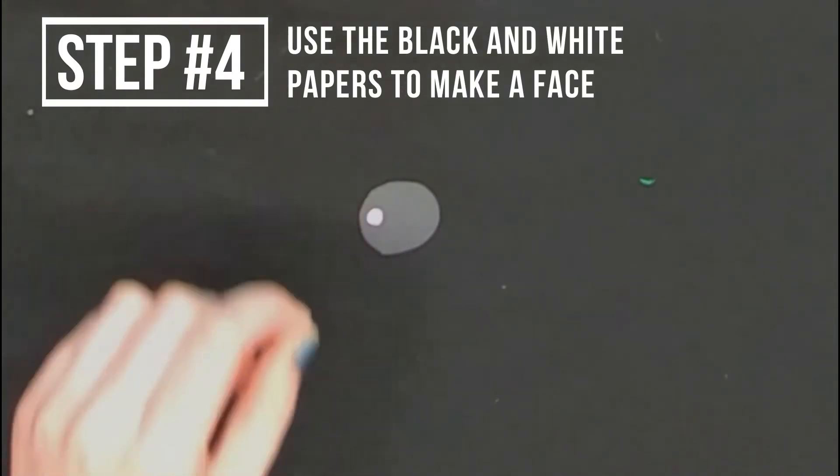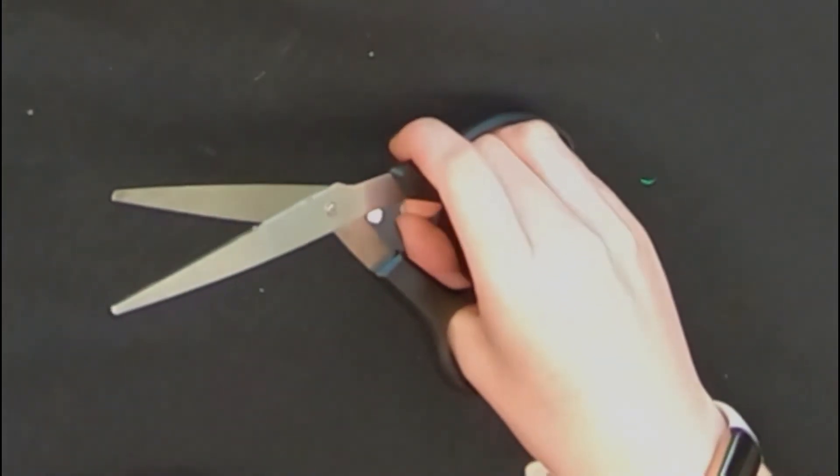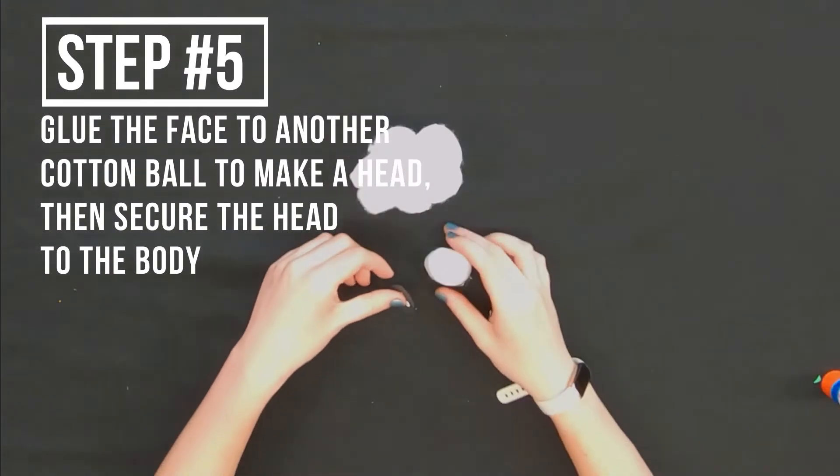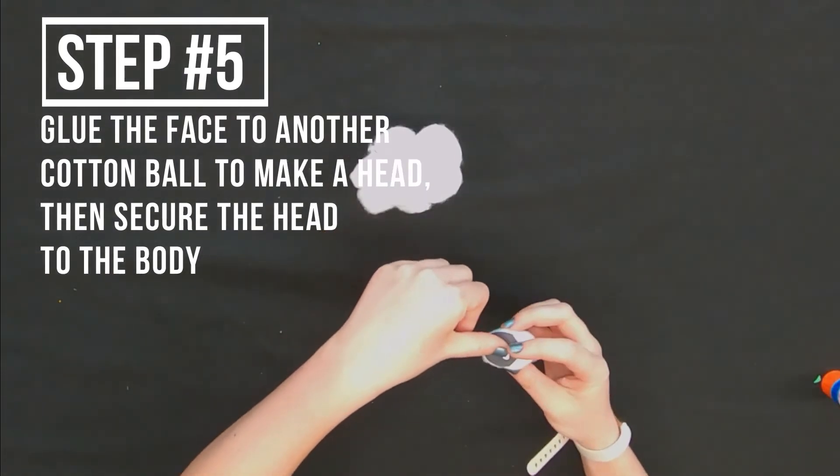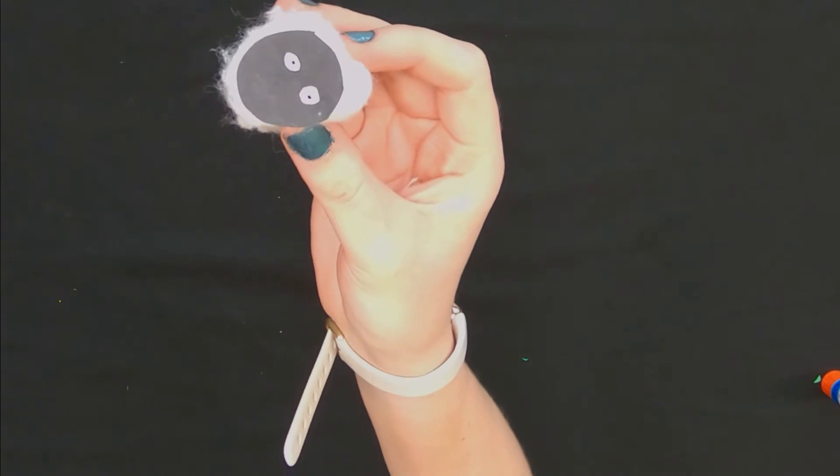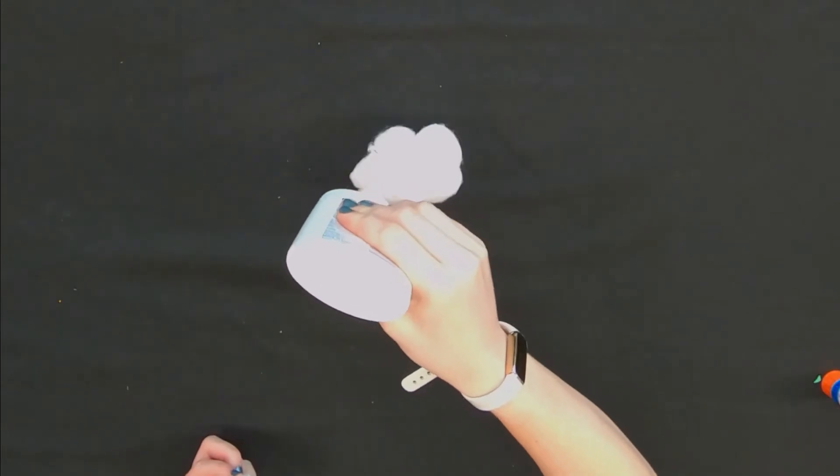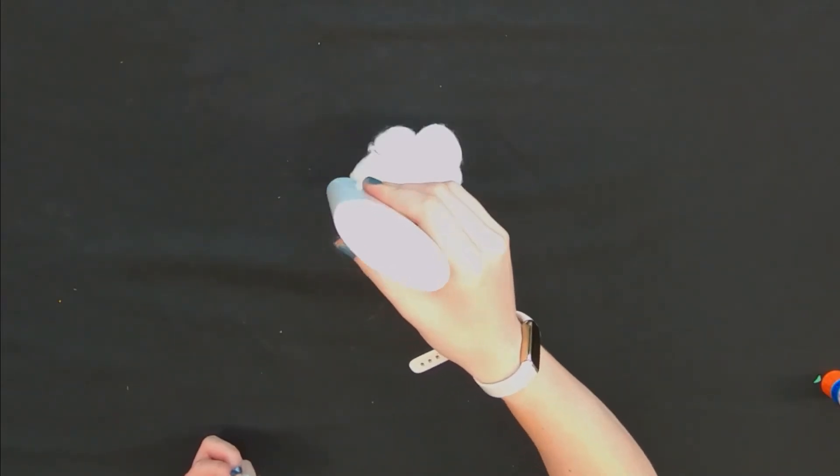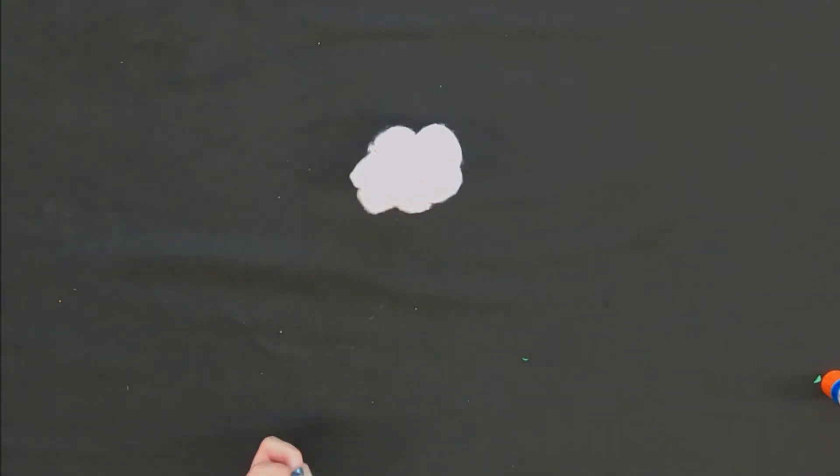Now we're going to use that black and white paper to make a little face for our sheep. You cut one black circle about the size of a cotton ball and then two smaller white ones to make the eyes. Now that you've got your face done, you're going to want to glue it to another cotton ball and that's going to be the head. Now we're just gluing that onto the body that we made.